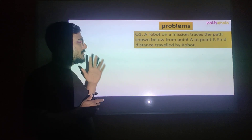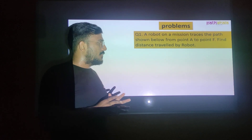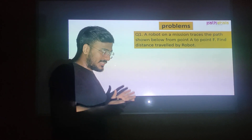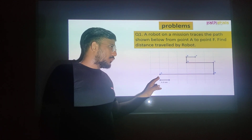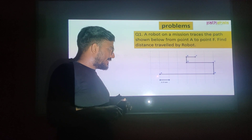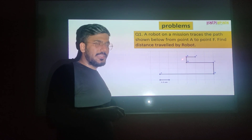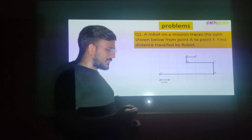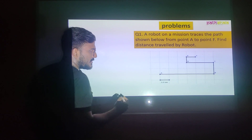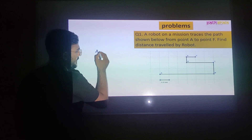The first sum says: a robot on a mission traces the path shown below from point A to point F. The robot starts from A, goes to B, then C, then D, then E, and finally F. Find the distance travelled. To find the total distance, we add all the small path segments. They have given a scale where one small box equals 0.5 km.